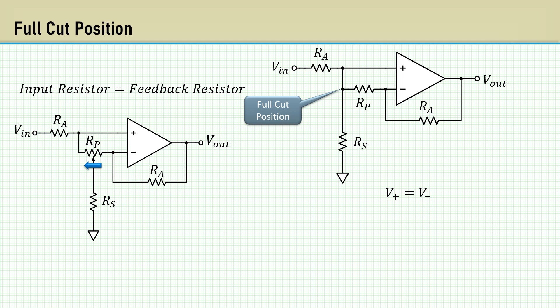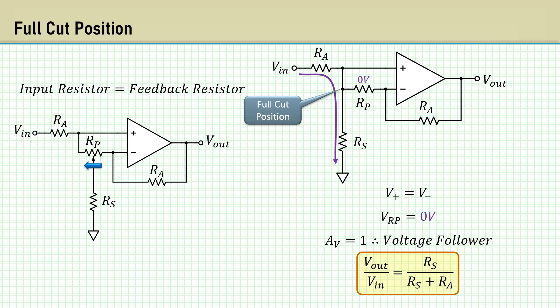Since the potentiometer is across the V plus and V minus inputs, the voltage across the pot is 0 volts. Through abstraction, there is 0 current flowing into the op-amp inputs, and the current through the pot is 0, and the voltage across it is 0, so it's essentially infinite. The circuit is now in the form of a voltage follower, which RA has a feedback resistor, and therefore the amplifier gain is 1. The input is a voltage divider between RA and RS, and therefore V out over V in is the voltage divider equation, RS over RS plus RA.